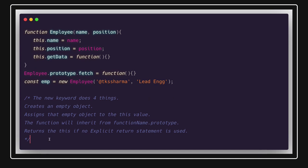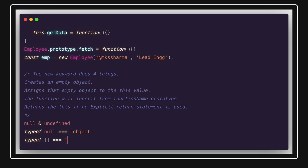Now let's talk about `null` and `undefined`. What do you get when you do `typeof null`? Always remember — it returns `'object'`. Null is considered an object in JavaScript. And `typeof undefined` returns `'undefined'`. Similarly, `typeof array` is also `'object'`.